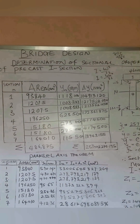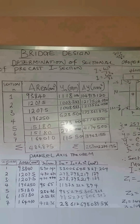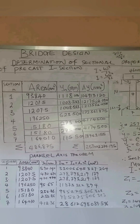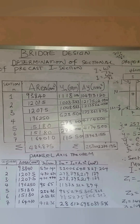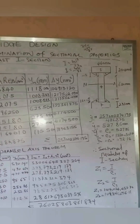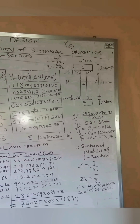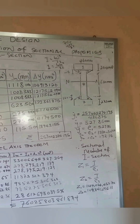Looking at the sectional modulus results, we've been able to calculate the moment of inertia of the I-section and the sectional modulus. The section has been divided into seven sections; the areas of each section have been taken, and using the parallel axis theorem, we've determined the moment of inertia of the I-section. We can now proceed to determine the moment of inertia of the composite section. Every other parameter has been obtained.